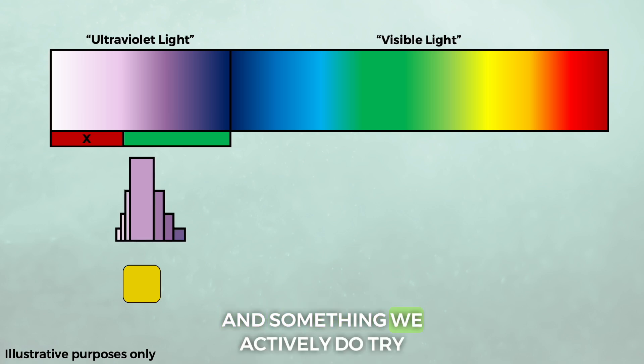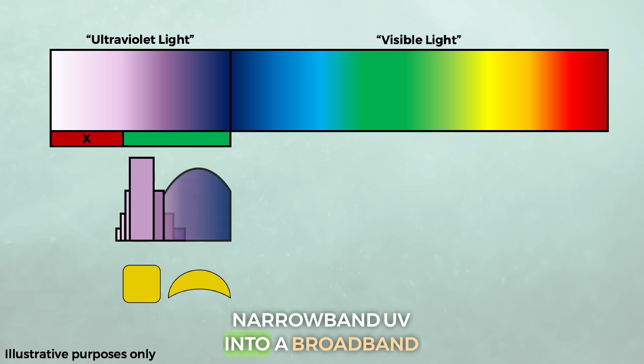Now, something we can try, and something we actively do try, is to add a phosphor similar to how we did with the white diodes earlier. There are chemical blends that work, and that would create an output that turns that narrowband UV into a broadband output.